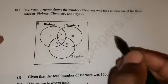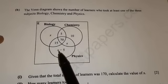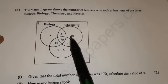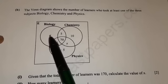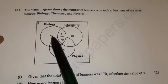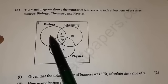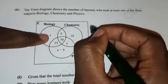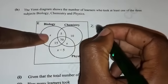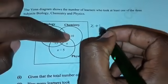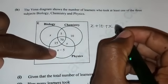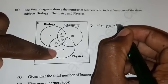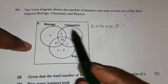So we are going to add all the learners and equate them to 170. You need to be careful when you are adding, especially when you have three sets. First, let's add these that are not on the intersection. So we have x plus 10 plus x minus 5.